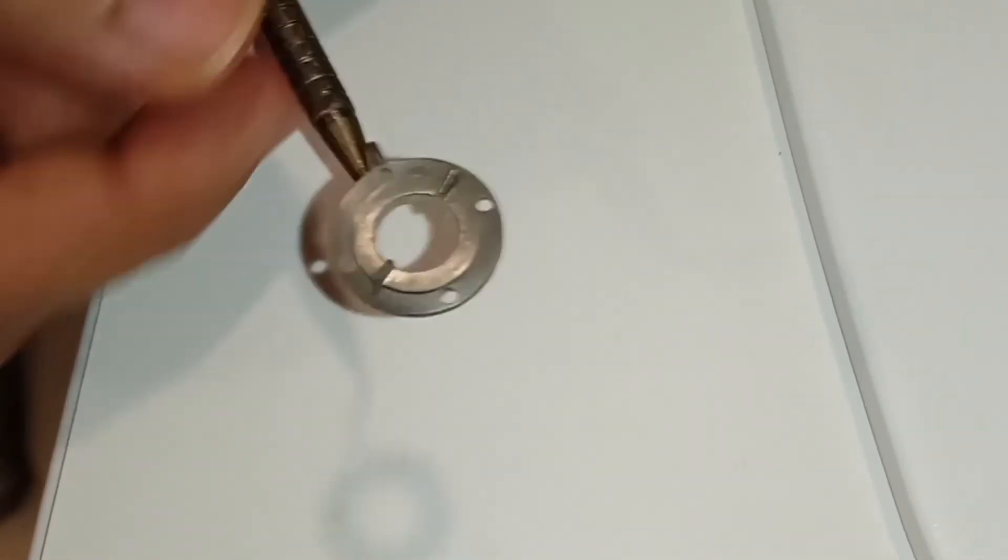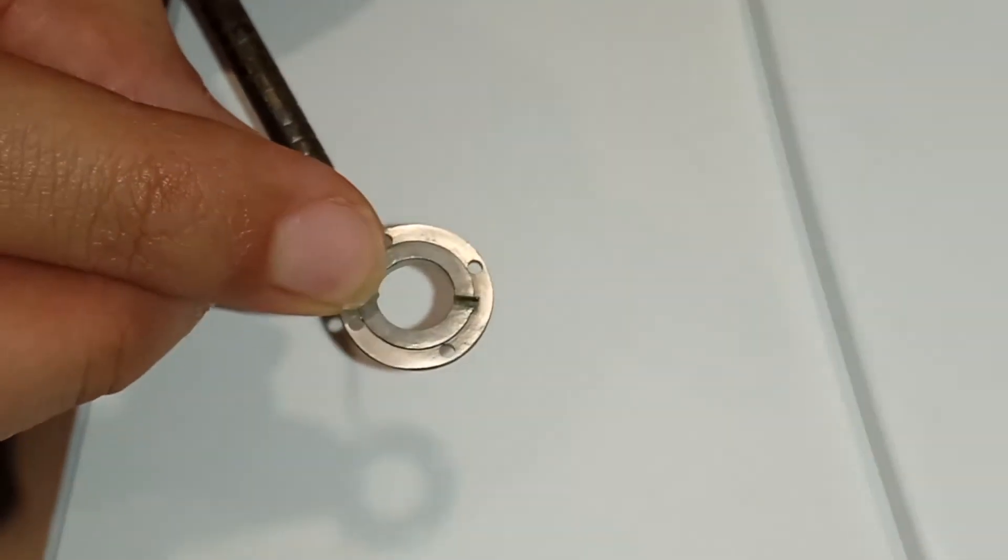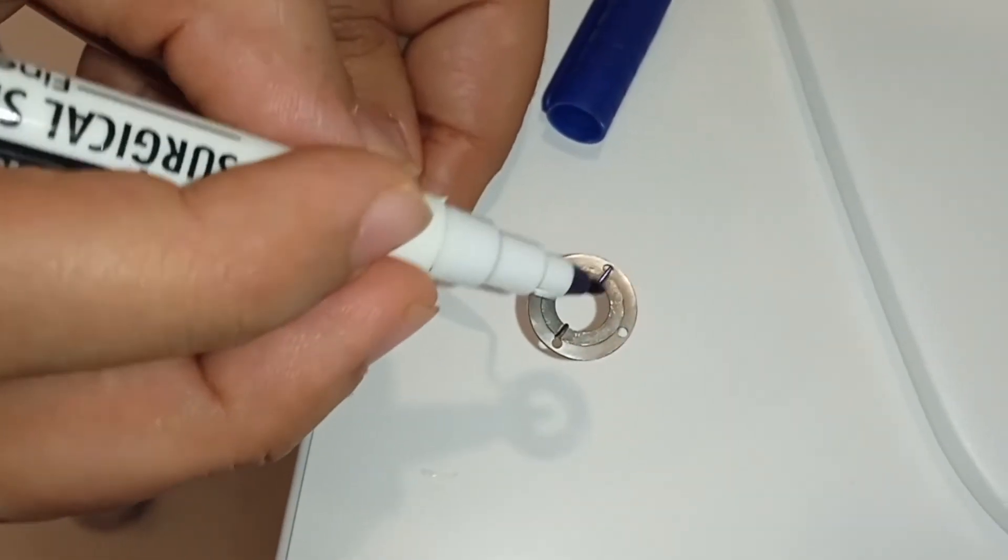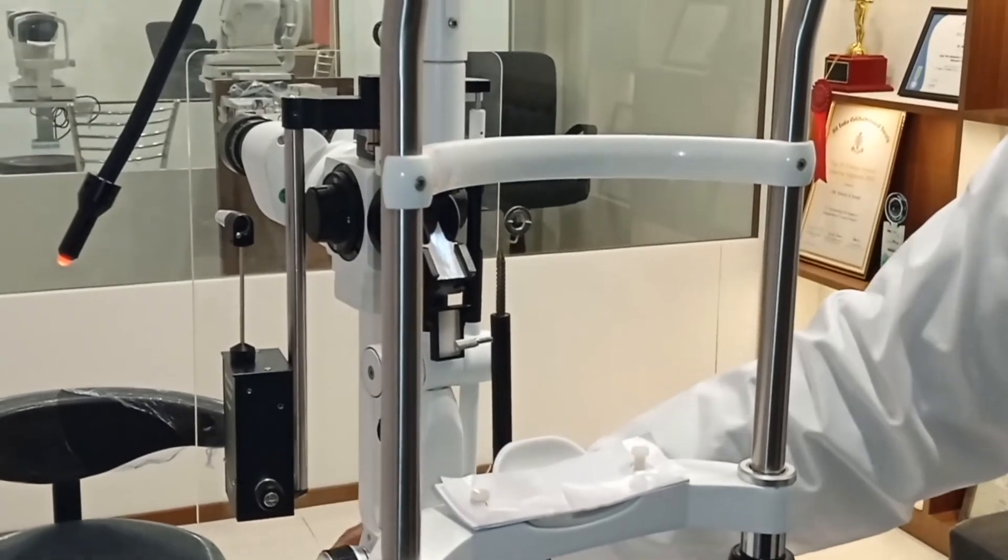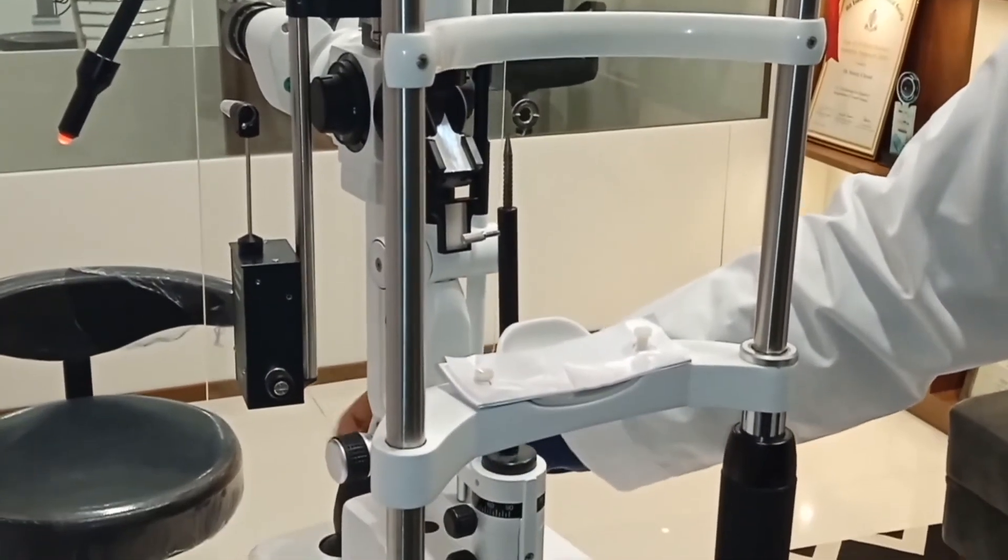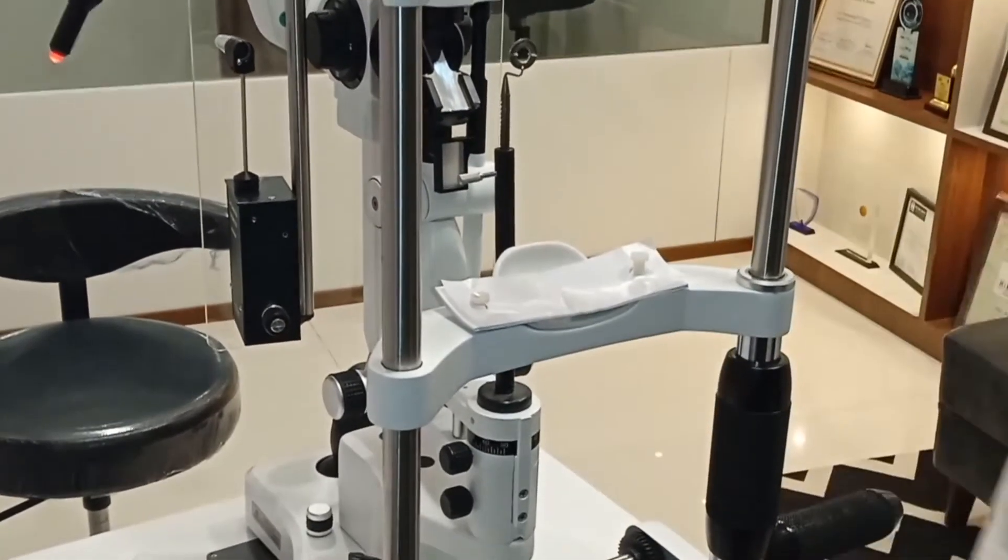We can actually mark the preoperative desirable axis using a blue marker pen, and then it can be fixed again on the calibration slot. The slit lamp can be taken forward, upward, downward, and backward.